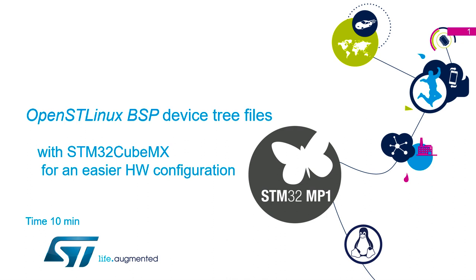Before we do the next lab, I've got a few slides to show you about device trees. We've already mentioned that the assignment for context and security is controlled by the device trees, and depending on whether you assign it to A7 secure or Cortex M4, it locks it to one of the two cores. If you assign it to A7 non-secure, it's available as a shared peripheral.